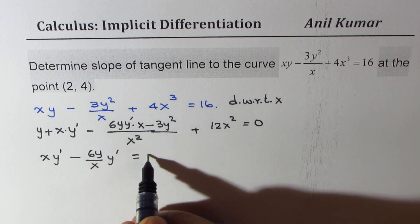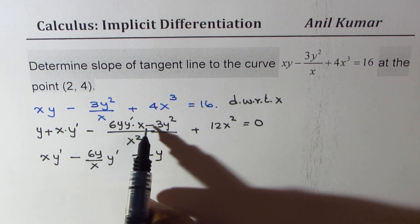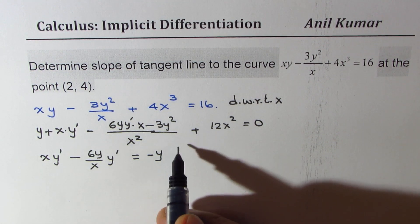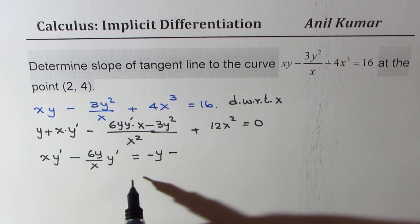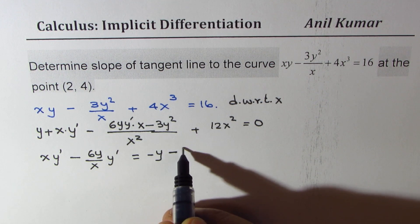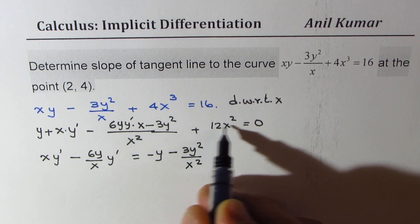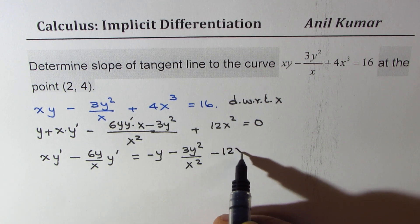I am taking all of those to the right side. So this becomes minus y. Now here minus and minus becomes plus. When you take it to the next side it will become negative again. 3y square over x square and that is minus 12x square.